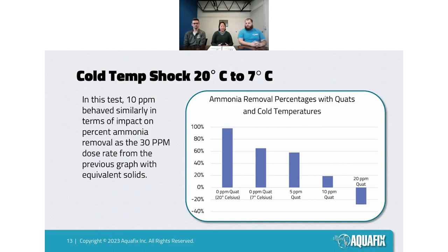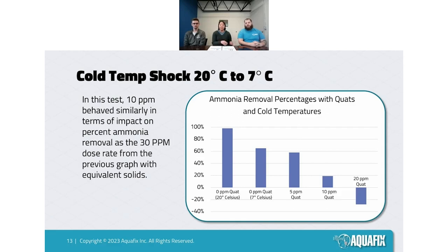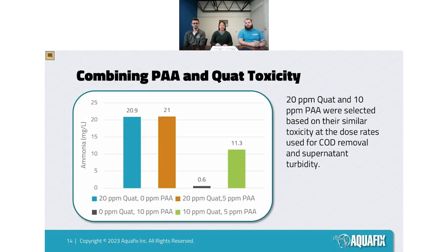This next study used the same lab-grown mixed liquor at 2000 ppm. We looked at different quat concentrations: at 0 ppm there was no effect; at 5 ppm, a slight reduction in ammonia removal; at 10 ppm, most ammonia removal capability was lost; and at 20 ppm, nitrifiers were essentially eliminated. This magnified the effects and allowed us to compare results from the previous graph.